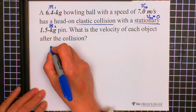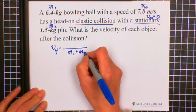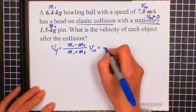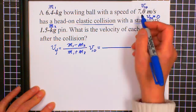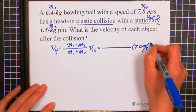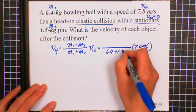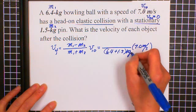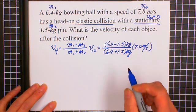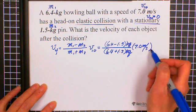So we can write V1 final equals (M1 minus M2) over (M1 plus M2) times V1 initial. So we can plug the number in. V1 is 7, this is 7 meters per second. And M1 is 6.4 plus 1.5 kilograms, and 6.4 minus 1.5 also kilograms. So the unit we can see cancel out, so we got meters per second. And the final velocity.